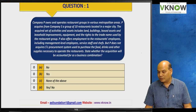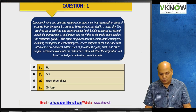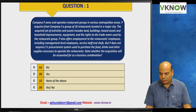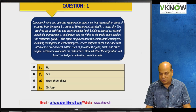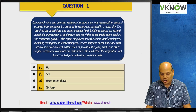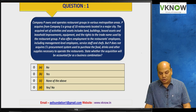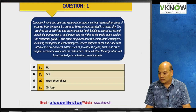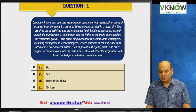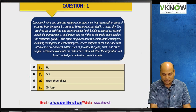But P does not acquire S's procurement system used to purchase food, drinks, and other supplies. The question is: will this acquisition be accounted for as a business combination? There is input, substantive process, and output — but the procurement system is not taken over. However, processes that can be easily replicated from outside, or where P already has a procurement system, do not need to be acquired.